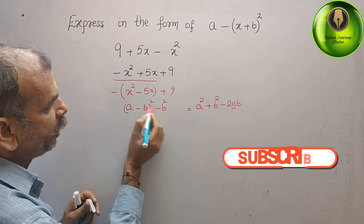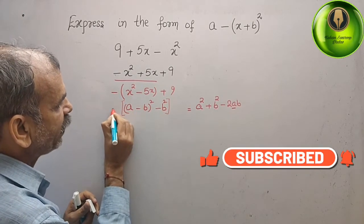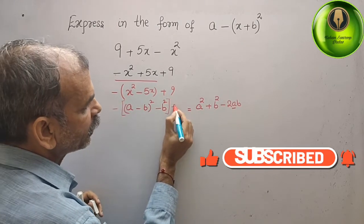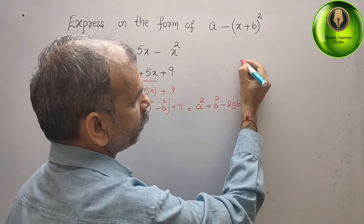Now we will put this perfect bracket. And we will put minus sign here and plus 9 here.